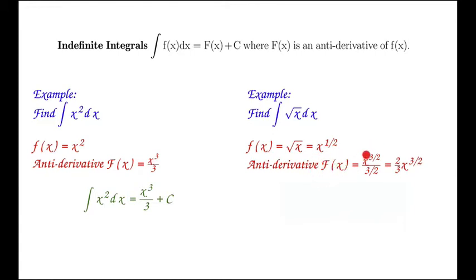One of the antiderivatives is x to the 3 halves divided by 3 halves. That is, we take the 1 half, we add 1 to it to get 3 halves, and we have x to the 3 halves divided by 3 halves. 1 over 3 halves is 2 thirds, so we get 2 thirds x to the 3 halves. So that's one of the antiderivatives.